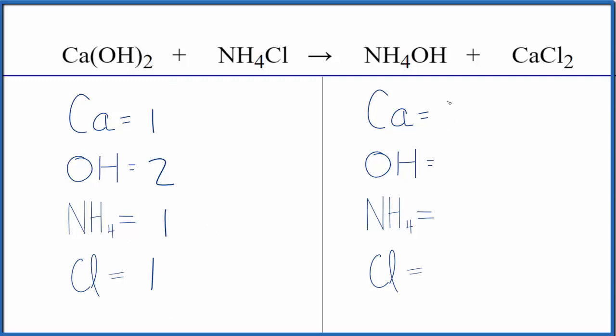Here on the product side, we have one calcium, one hydroxide, one ammonium ion, and then two chlorines. So we can see right away we're going to need to fix either the hydroxides or the chlorines.